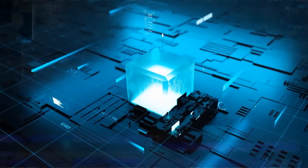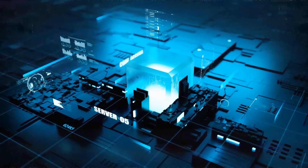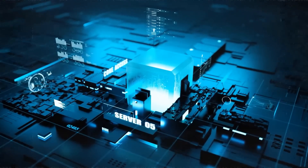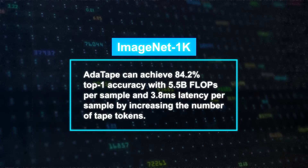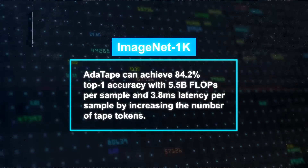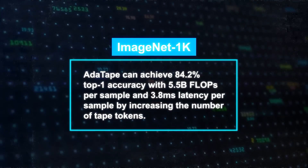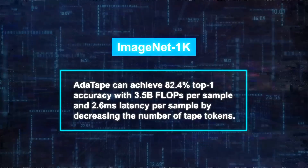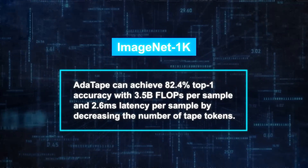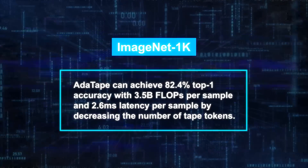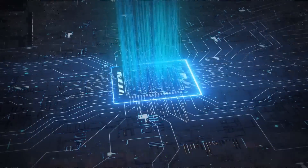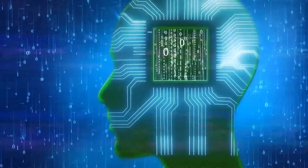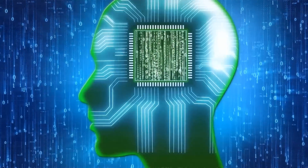AdaTape also shows a quality-cost trade-off advantage over other models, meaning it can achieve higher accuracy with lower cost or lower accuracy with higher cost depending on the user's preference. For example, on ImageNet 1K, AdaTape can achieve 84.2% top-1 accuracy with 5.5B FLOPs and 3.8ms latency by increasing the number of tape tokens, or 82.4% top-1 accuracy with just 3.5B FLOPs and 2.6ms latency by decreasing tape tokens. This means AdaTape can be tuned to fit different scenarios and requirements, showing how it is efficient and flexible in terms of computational cost and performance.